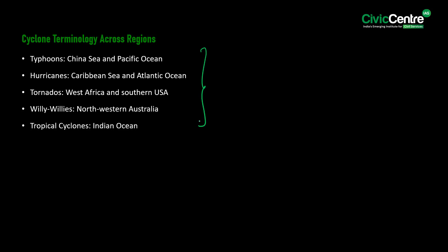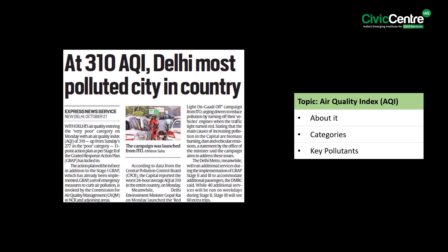The second article of the day says that with Delhi's air quality entering the very poor category on Monday with an Air Quality Index of 310, up from Sunday's 277 in the poor category, the 11-point action plan as per Stage 2 of the Graded Response Action Plan has kicked in. In this context, let us talk about the Air Quality Index.